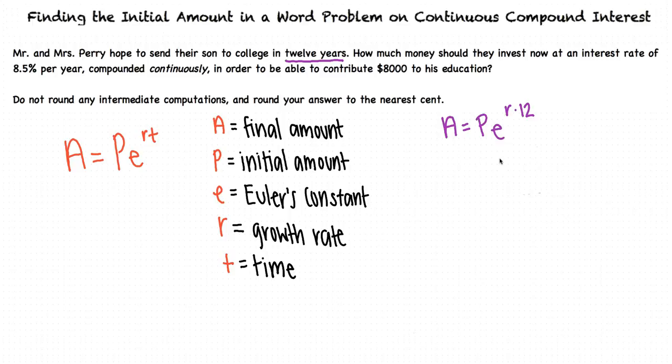And we plug in 8.5 for R, right? Well, we see that the interest rate is 8.5% per year. We need to rewrite this percent as a decimal in our model, so we really use 0.085 as our rate, R. Finally, we see in the problem that the final amount desired is $8,000. So we plug this in for A in our formula.